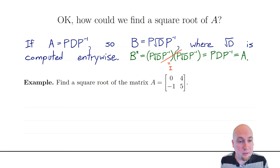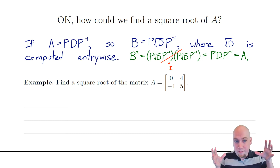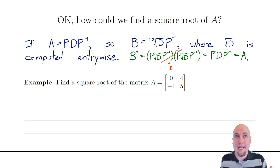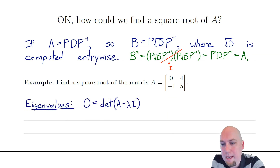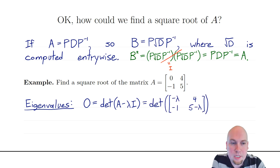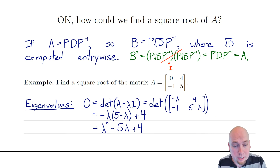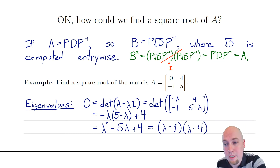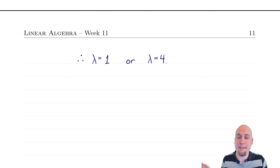Let's go through an example and see how this works. Let's compute a square root of the matrix A = [[0, 4], [-1, 5]]. There's a lot of work that goes into this, but it's just a mechanical process. We need a diagonalization, so we compute eigenvalues and eigenvectors first. Setting det(A − λI) = 0, subtracting λ off the diagonal, using the 2×2 determinant formula, we get a quadratic equation that factors as (λ − 1)(λ − 4). So the eigenvalues are λ = 1 and λ = 4.